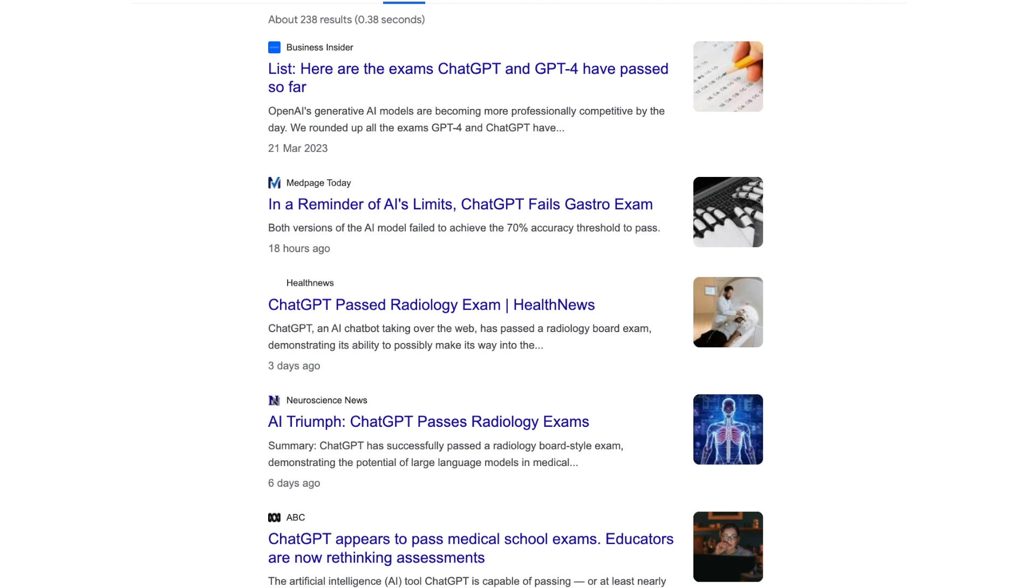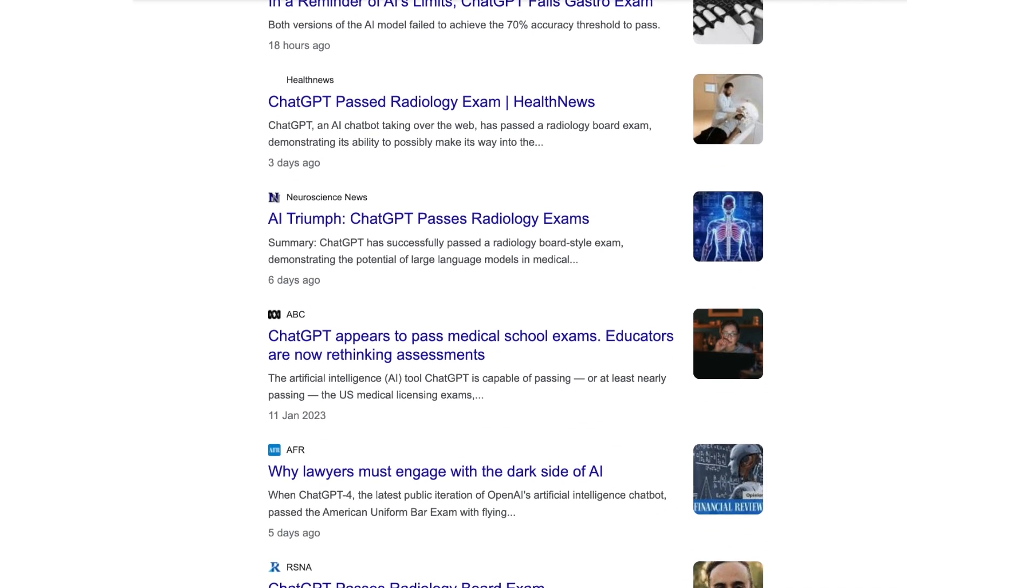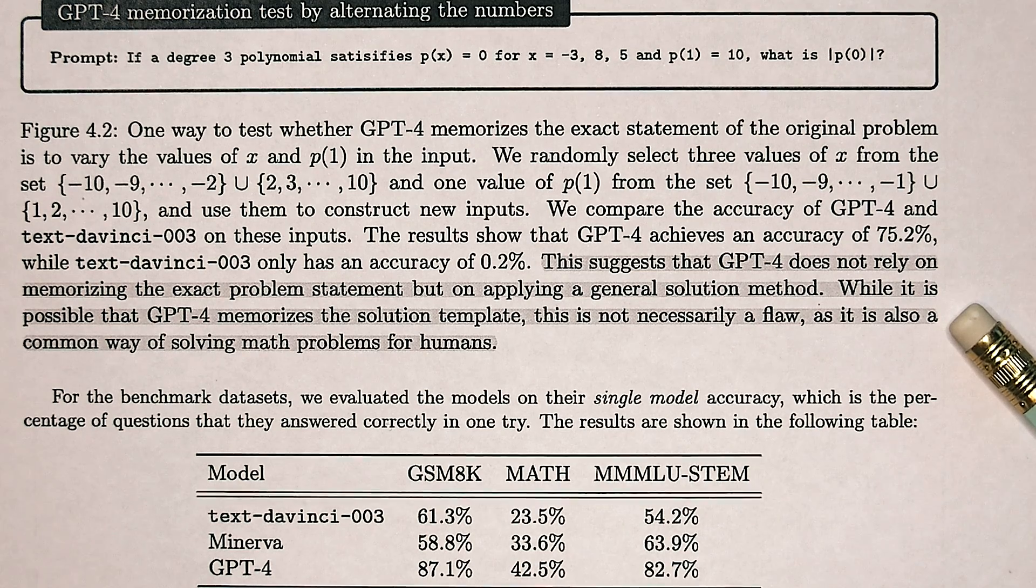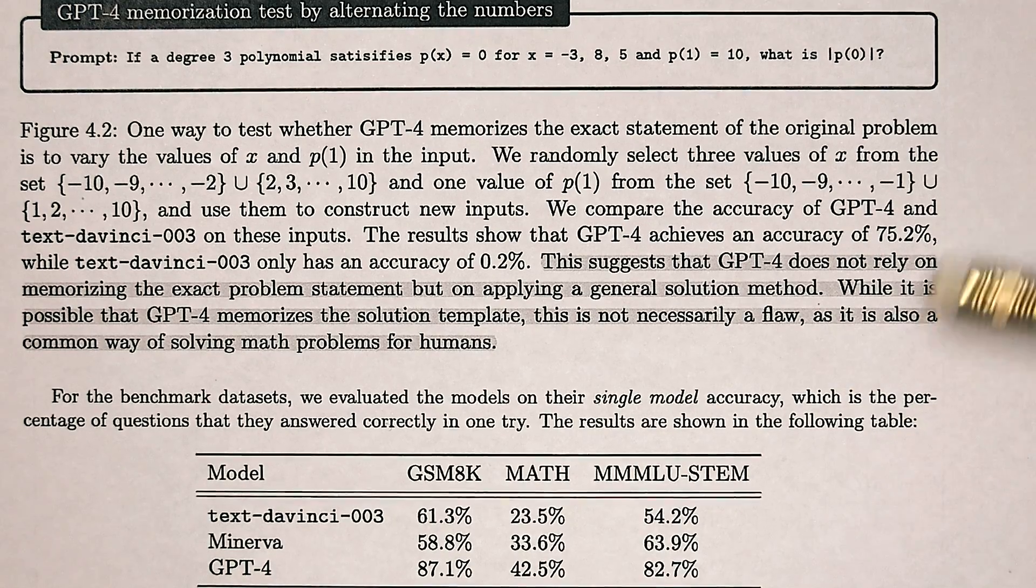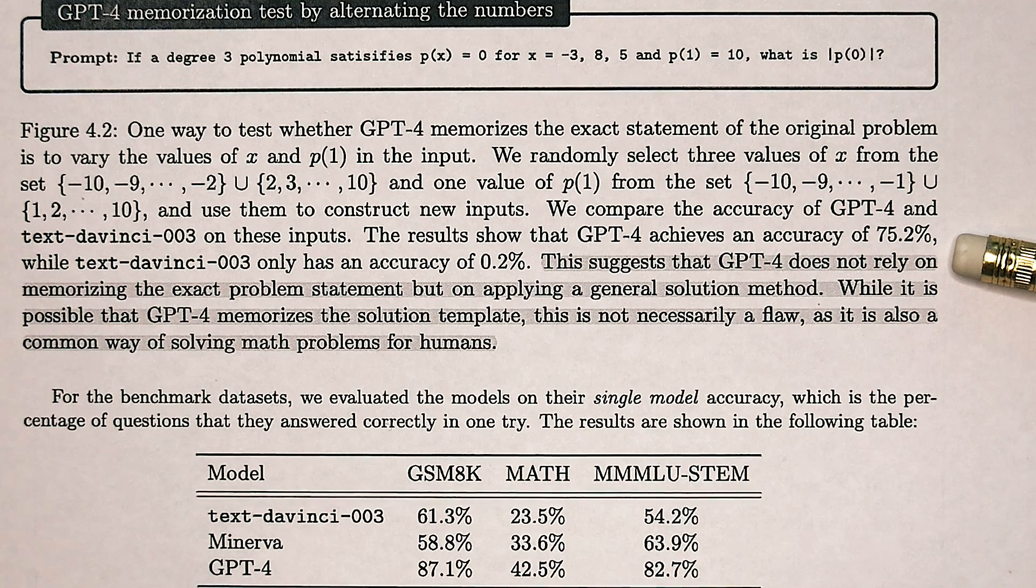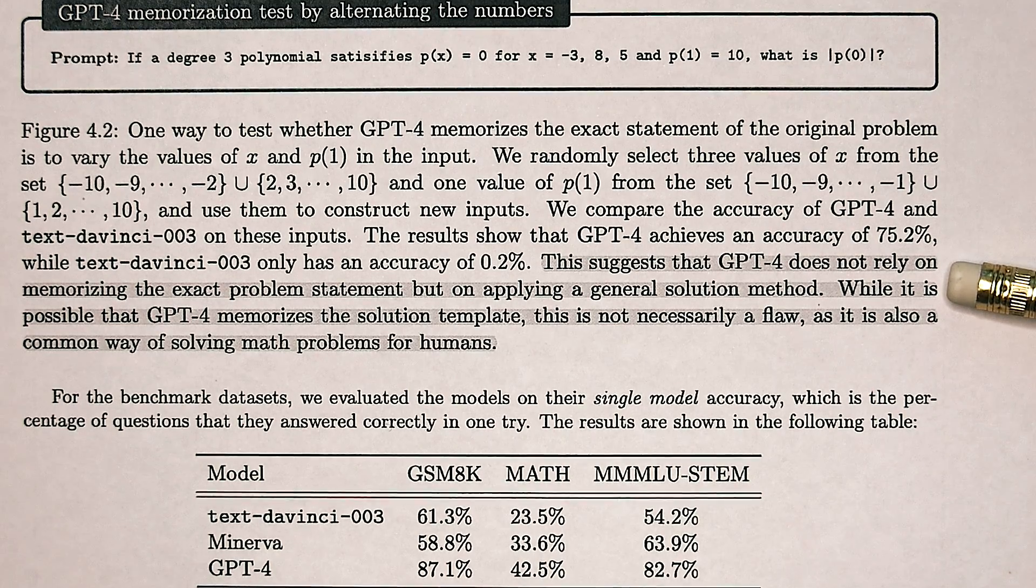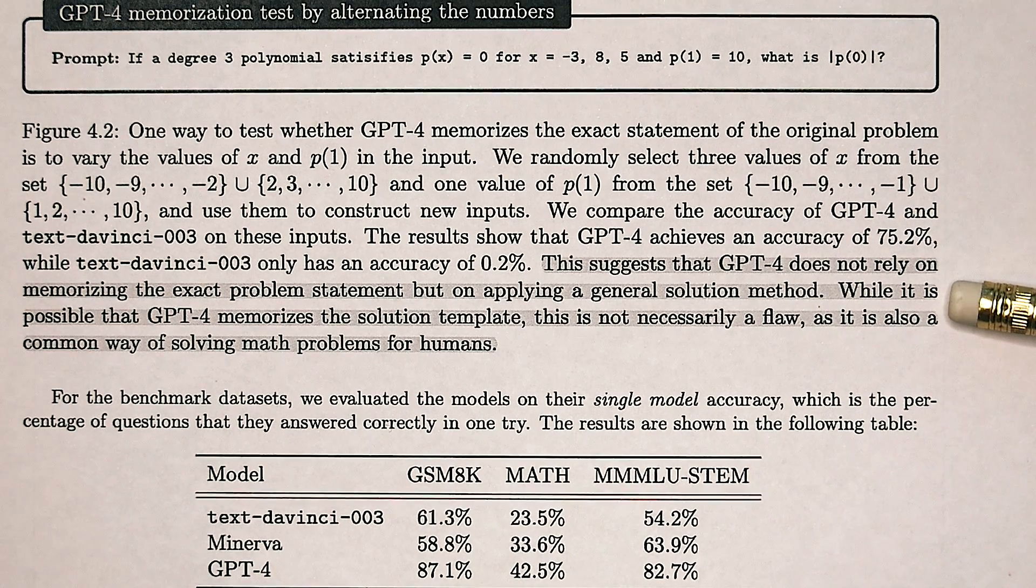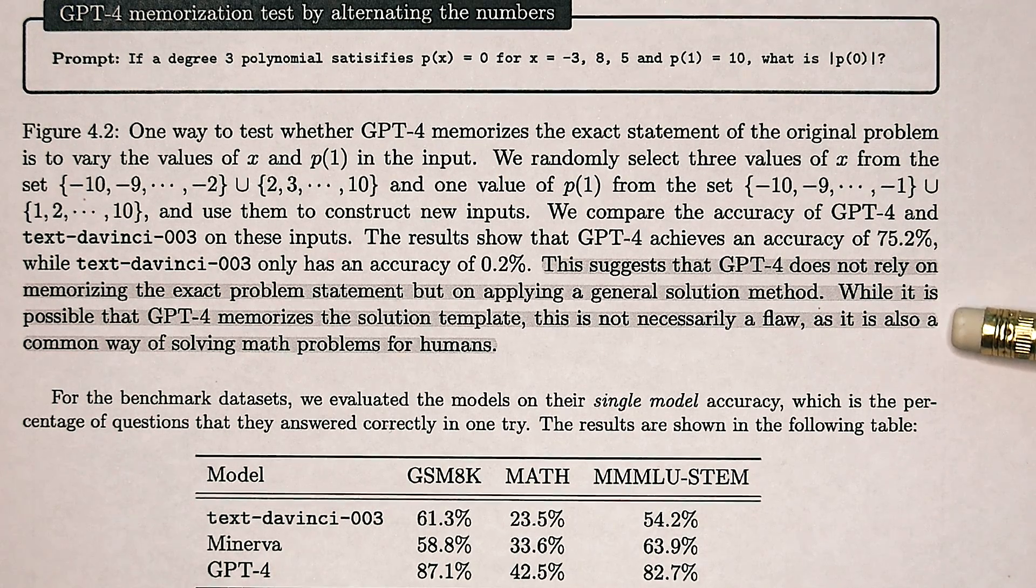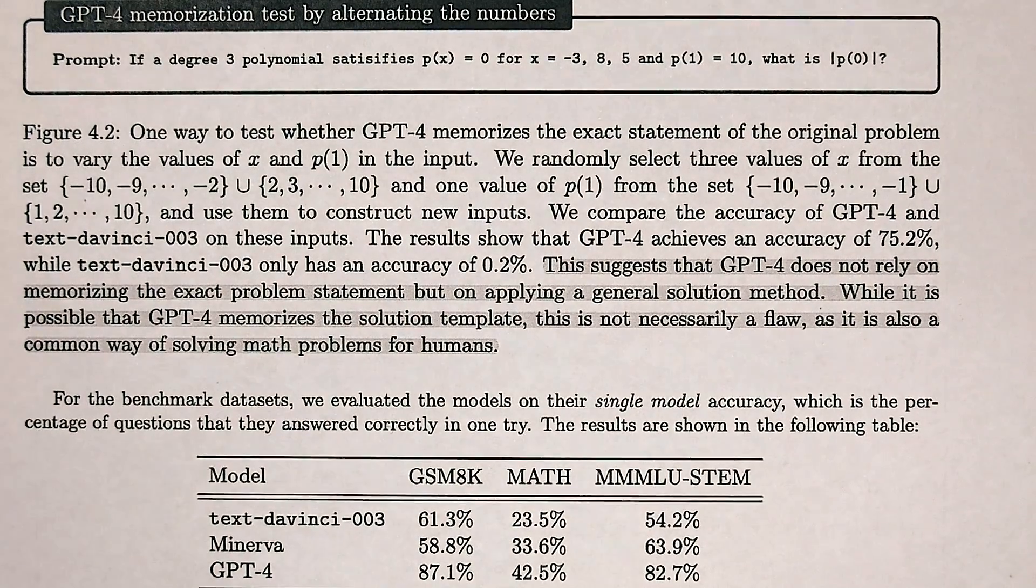And as I mentioned, while ChatGPT is still struggling with IMO problems, it has already passed a bunch of exams. There's a note here back in the Microsoft paper saying that GPT-4 does not rely on memorizing the exact problem statement, but on applying a general solution method. While it is possible that GPT-4 memorizes the solution template, this is not necessarily a flaw, as it is also a common way of solving math problems for humans.